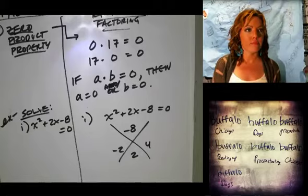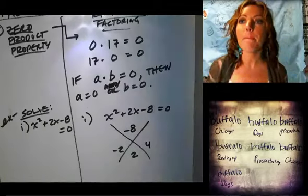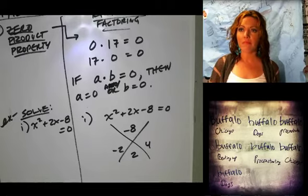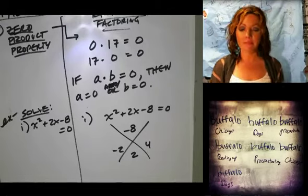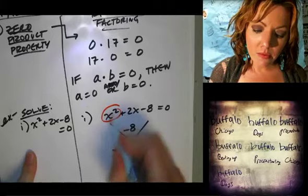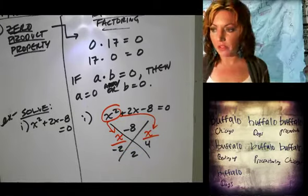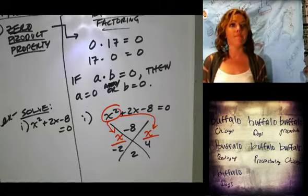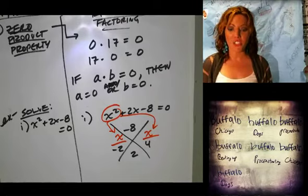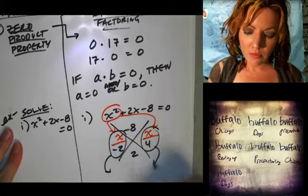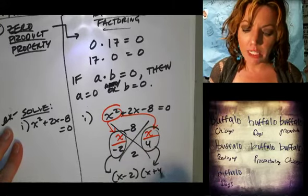Now what? I'm going to go on a super tangent in a minute, but I want to finish the problem first. Okay, now what? Super tangent. Rachel? Would you put it so x minus 2 times x plus 4? Good. x plus 4 equals 0.